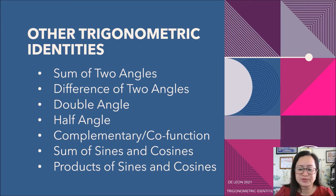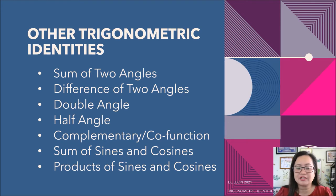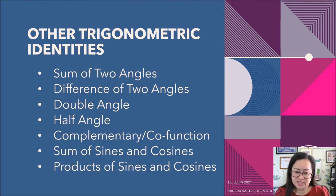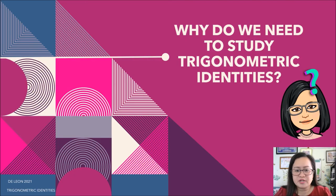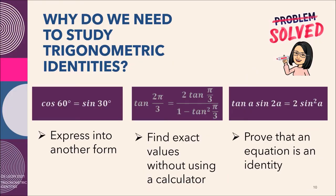Aside from the basic trigonometric identities, we also have other trigonometric identities: for the sum of two angles, difference of two angles, double angle, half angle, complementary or co-function identity, the sum of sines and cosines, and products of sines and cosines. The purpose of studying these trigonometric identities is to express a complex expression into another form, find exact values without using a calculator, and prove that an equation is an identity.